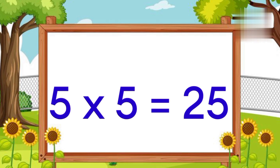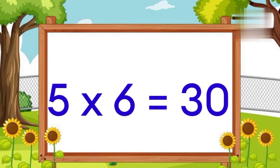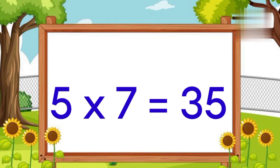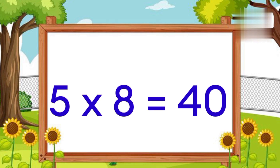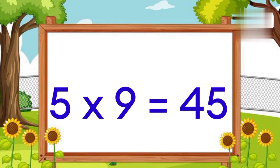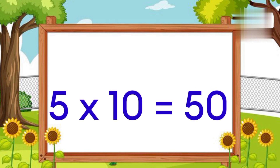Five sixes are thirty. Five sevens are thirty-five. Five eights are forty. Five nines are forty-five. Five tens are fifty.